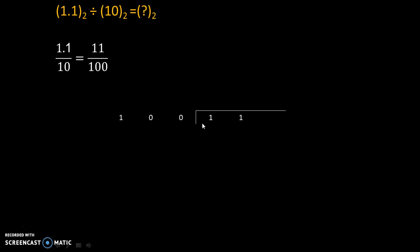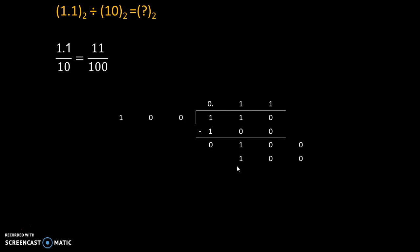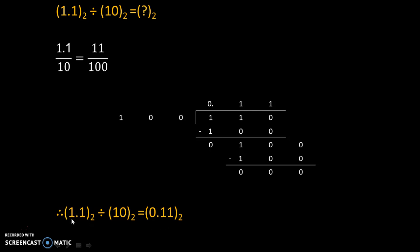So we have 11 divided by 100. Since 11 is smaller than 100, we start with 0-point and add a zero. 100 multiplied by 1 gives 100. Subtracting: 0 minus 0 is 0, 1 minus 0 is 1, 1 minus 1 is 0. We can add one more 0, and 100 multiplied by 1 gives 100 again. Subtracting gives remainder equal to 0. So our quotient is 0.11 base 2. Therefore, 1.1 base 2 divided by 10 base 2 equals 0.11 base 2.